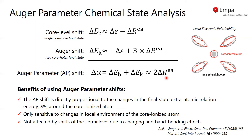And why is this so interesting? Because this extra-atomic relaxation factor is very sensitive to changes in the local chemical environment of the atoms in the compound. This means we have a very sensitive probe to measure tiny changes in compositional structure, which is not possible when using core level shifts.